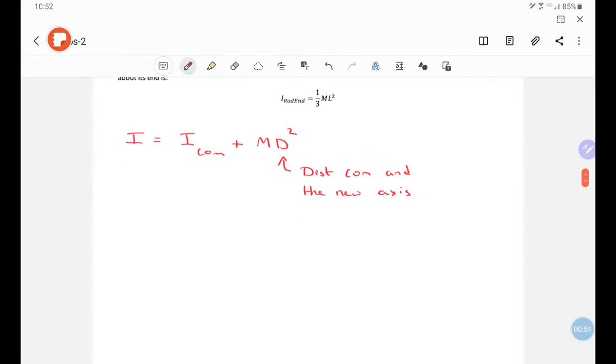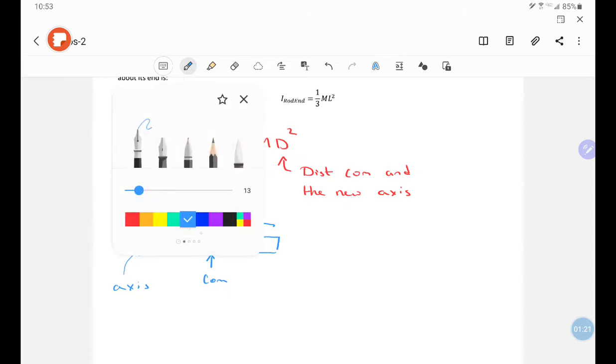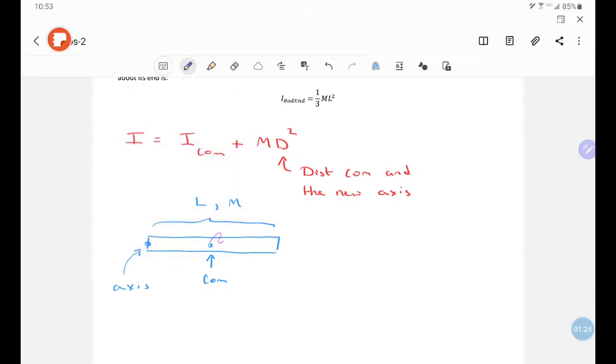So, if we take a uniform rod with length l and mass m, its center of mass is here, the axis of rotation is here, and the distance between the center of mass and new axis is l over 2.